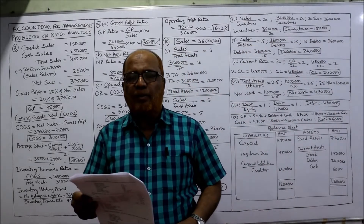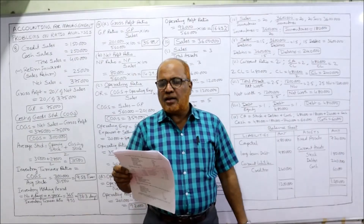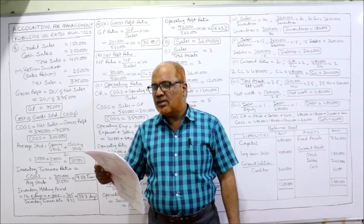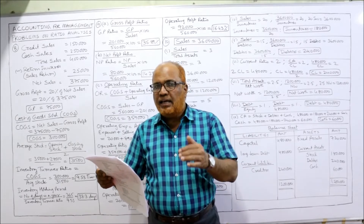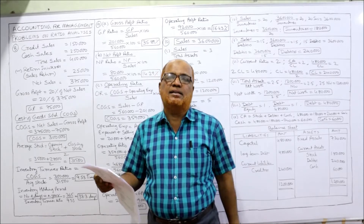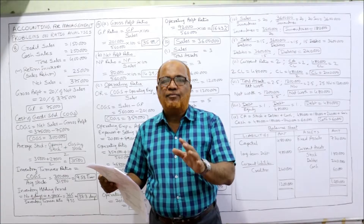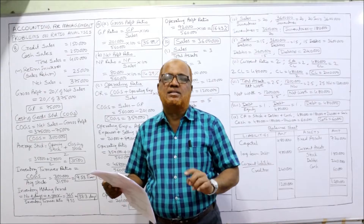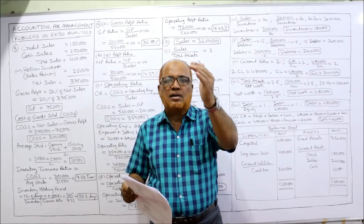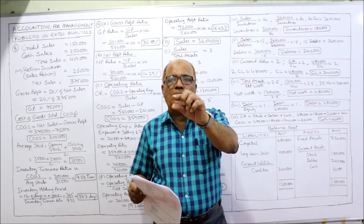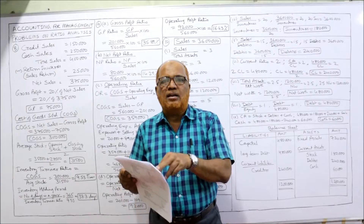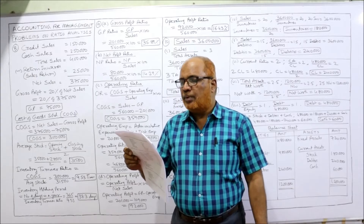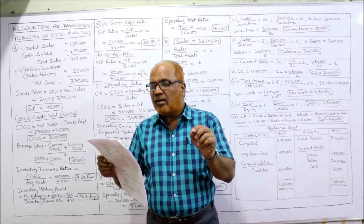Problem number eight: Krishna and Company presents the following information for the year ended 31st December 2018. Credit sales: 1,50,000. Cash sales: 2,50,000. Return inward (sales return) will be deducted from total sales. Total sales means credit sales plus cash sales. From total sales deduct the return inward to get net sales. Closing stock: 35,000. Opening stock: 28,000.